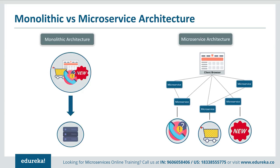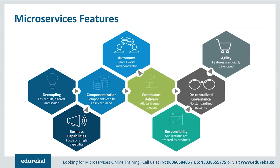To summarize the difference: monolithic architecture had a single framework for all features on a single database, whereas microservice architecture has different microservices for each feature, each handling their own database. The features that made developers shift to microservices include: applications are easily built, altered, and scaled; they focus on a single capability; all components can be easily replaced; teams work independently; frequent software releases are allowed; applications are treated as products; there are no standardized patterns; and most importantly, all features are quickly developed.